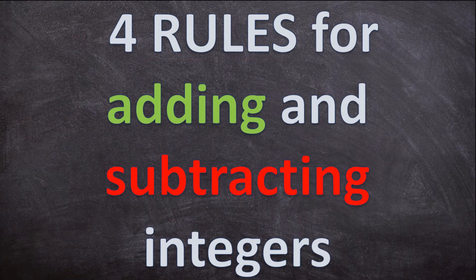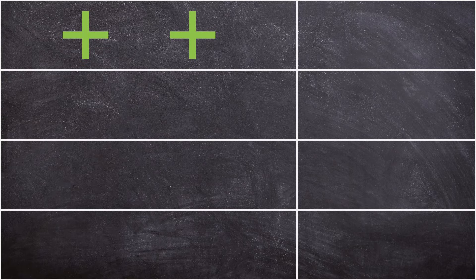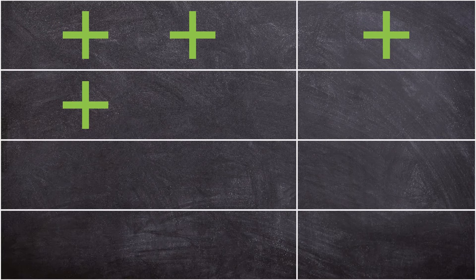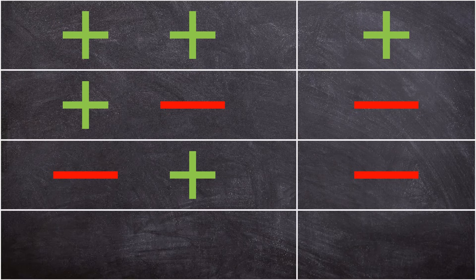So let's quickly recap the four rules when adding and subtracting integers. Rule 1: when you add a positive integer, you will add the integer. Rule 2: when you add a negative integer, you will subtract the integer. Rule 3: when you subtract a positive integer, you will subtract the integer. And Rule 4: if you subtract a negative integer, you will add the integer.